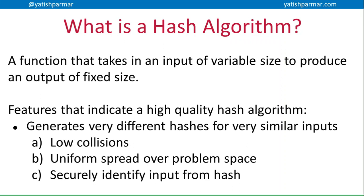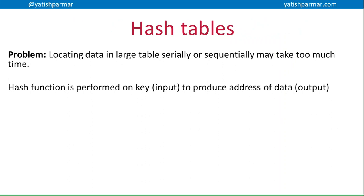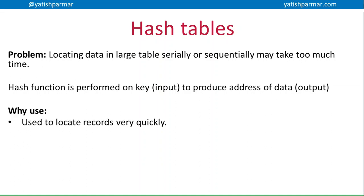Now let's think about some typical use scenarios. The first one is a hash table. When we've learned about files, we've talked about serial sequential files, index sequential files, and random access files, where we are storing data in random locations based upon the address generated from the key. Accessing data sequentially or in a serial nature just takes too much time. The advantage of using hash algorithms is that we can locate data very, very quickly within our file.